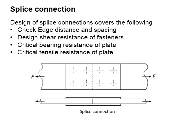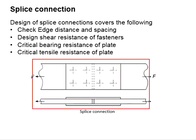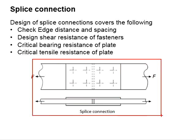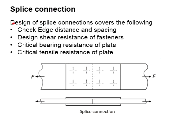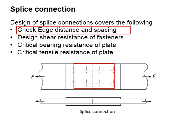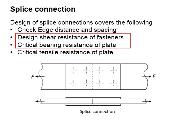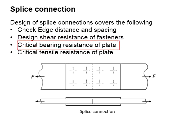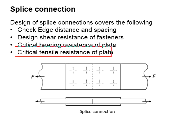Design of Tensile Splice. A typical tensile splice connection is to be designed in accordance to these criteria. First, check for the edge distance and the spacing of the bolt hole. Design the shear resistance of the fastener or the bolt. Check for the critical bearing resistance of the plate, and also check for the critical tensile resistance of the plate.